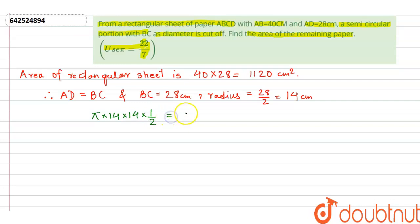Which is finally 22 by 7 into 14 into 14 into half that is 22 into 14, which is finally 308 cm².